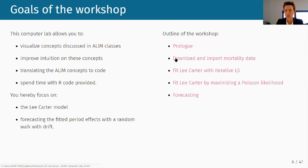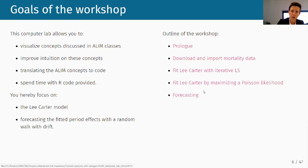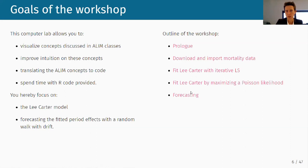First, where do we get our data — similar to last week. Then we'll focus on two ways to fit the Lee-Carter: first with a least squares solution, minimizing a sum of squared differences between the observed log death rates and the model expression; then switching to the Poisson likelihood. The last step covers calibrating the random walk with drift and generating paths for the future.